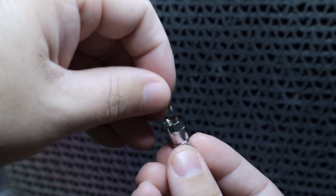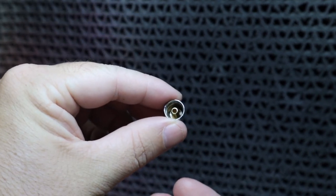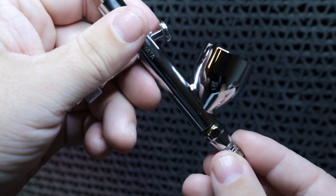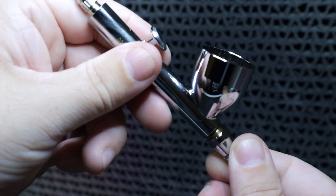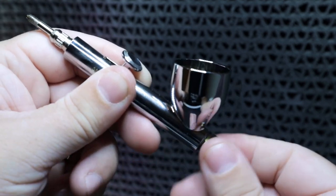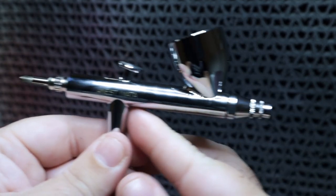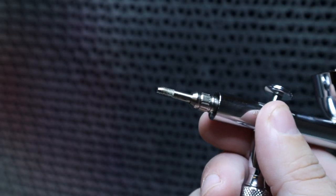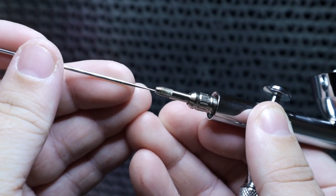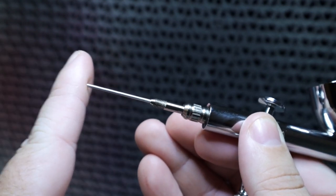Next we're going to reattach our nozzle and our nozzle cap. Depending on the type of airbrush that you have will determine how exactly you reattach it. For me, it's easiest just to drop it in and then screw it on in one go. Once the nozzle and the nozzle cap are seated properly, we're going to reinsert the needle from the back and push it all the way in until it seats.